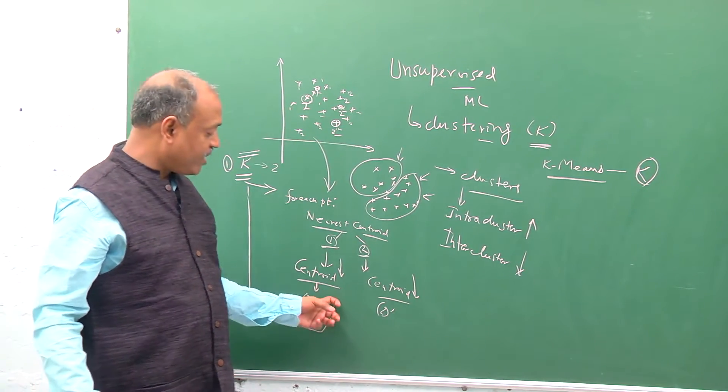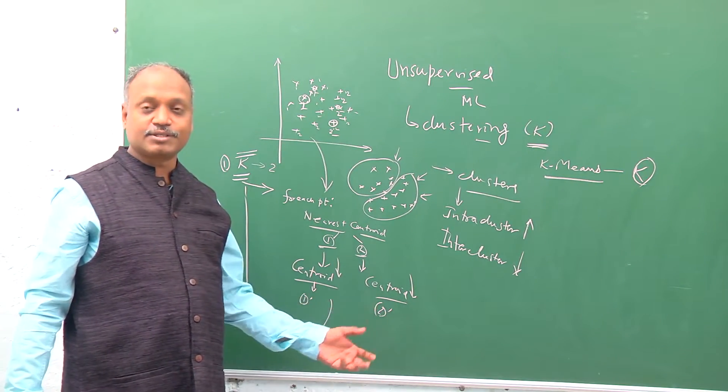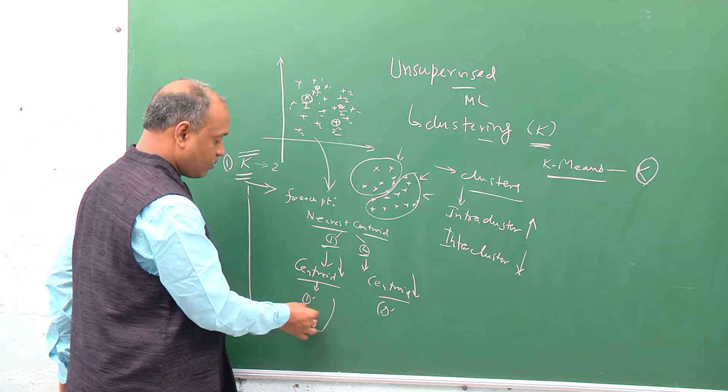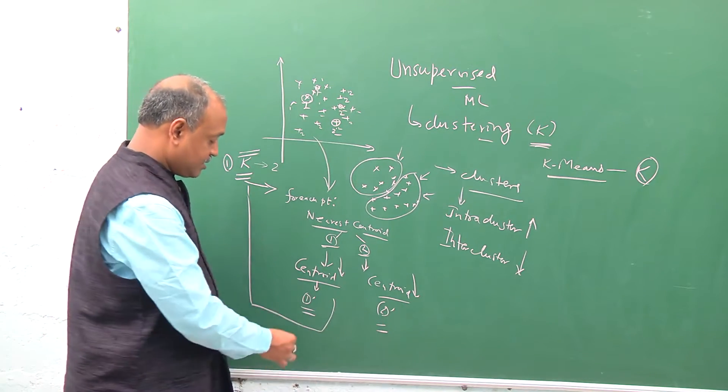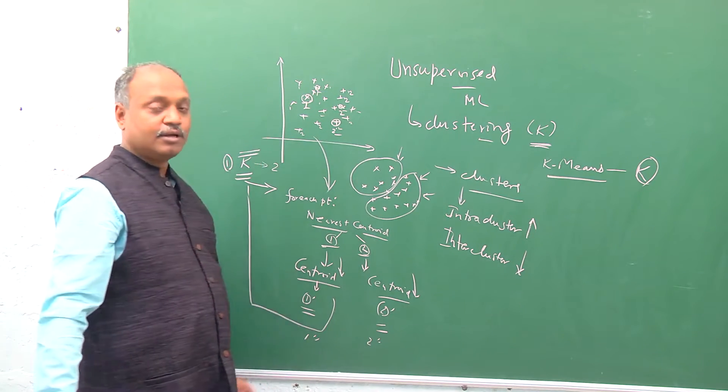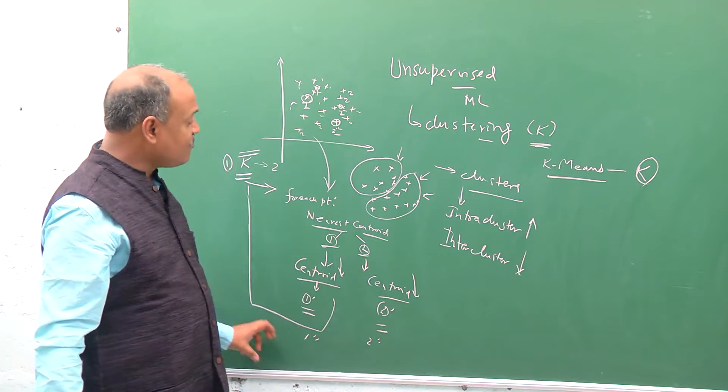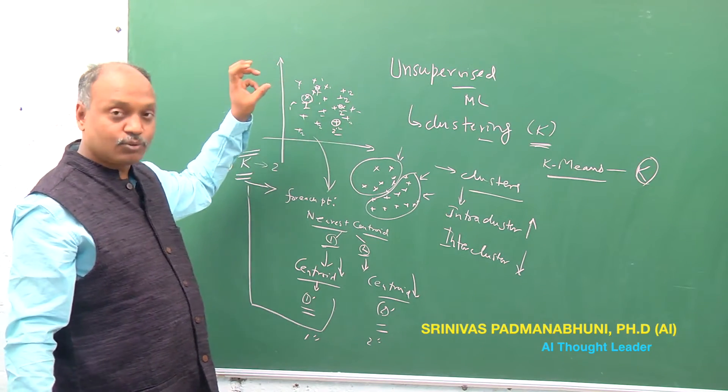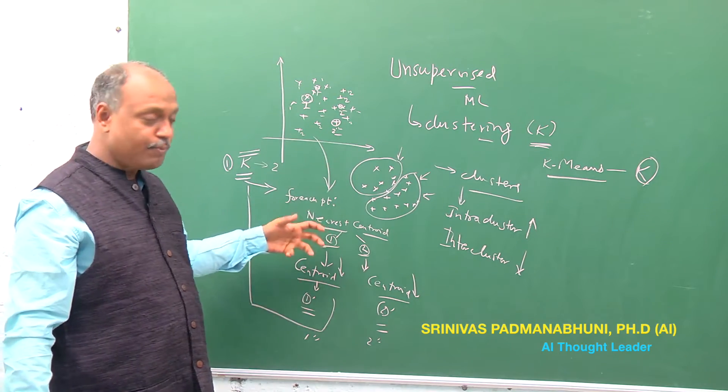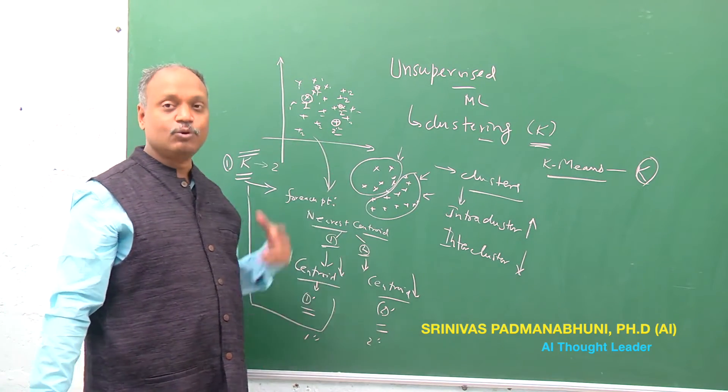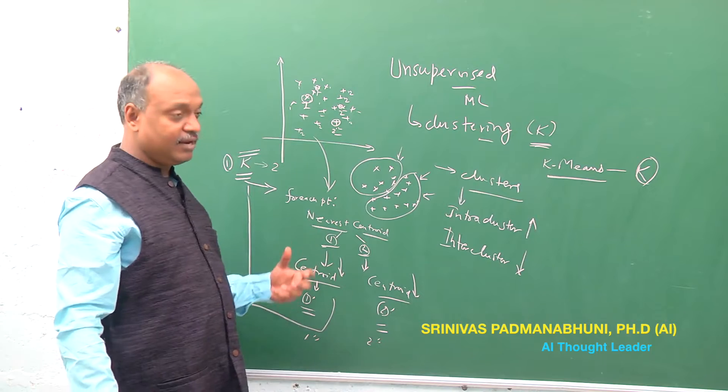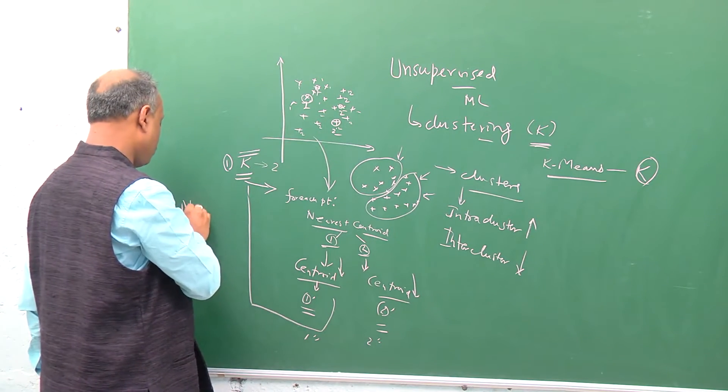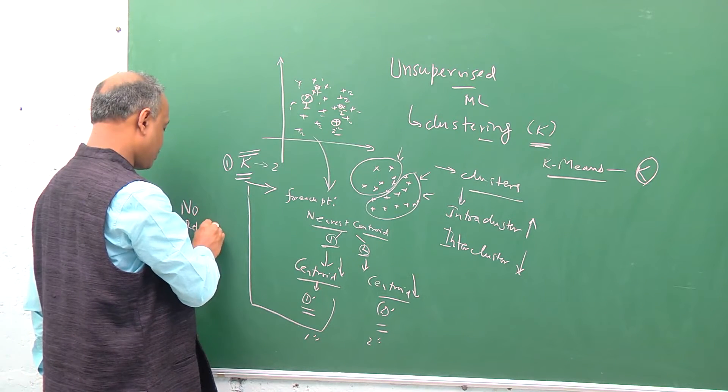We find out the new centroids of the revised cluster assignments, and we find out that there is one dash dash, two dash dash. Now again, we repeat the same problem with assigning the nearest cluster number to the nearest centroid, which each point is in the next loop, and continue this loop forever till you find that there is no relabeling happening. So when no relabeling happens, we're talking about convergence.